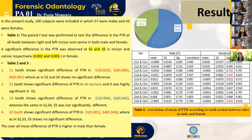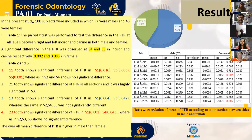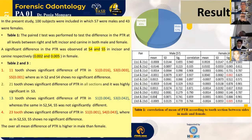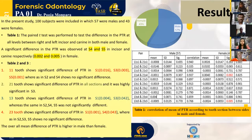Coming to the results, the descriptive analysis shows 43% females and 57% males. Table 1 shows the correlation of the mean PTR according to tooth section between both sides in males and females. In the male, there is no significant difference between both sides in all sections — S1, S2, S3, S4, and S5. So whether it is the right or left incisor or canine, that doesn't matter. But in the female, we found two significant results: in S4 in the central incisor, and S5 in the canine.